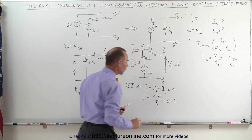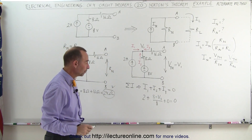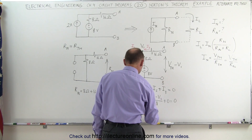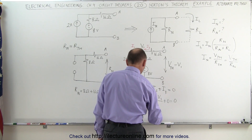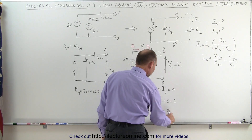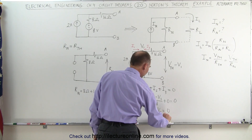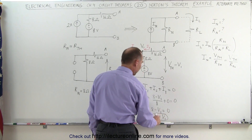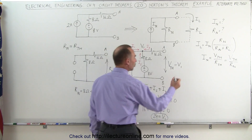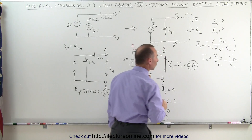Adding all that up equals zero. All we have to do now is solve for V1. Multiplying both sides by 8, we get 16 plus 8 minus V1 equals zero. Moving V1 to the other side and adding: 24 equals V1. Since V1 must equal the Thevenin voltage, and V1 equals 24 volts, the Thevenin voltage must be equal to 24 volts.